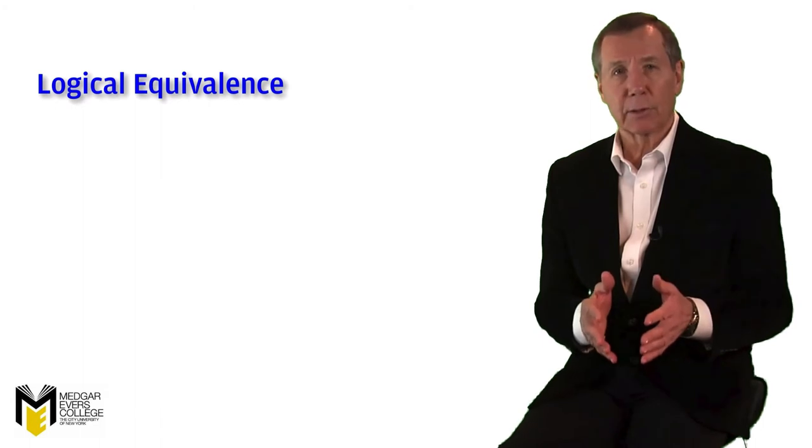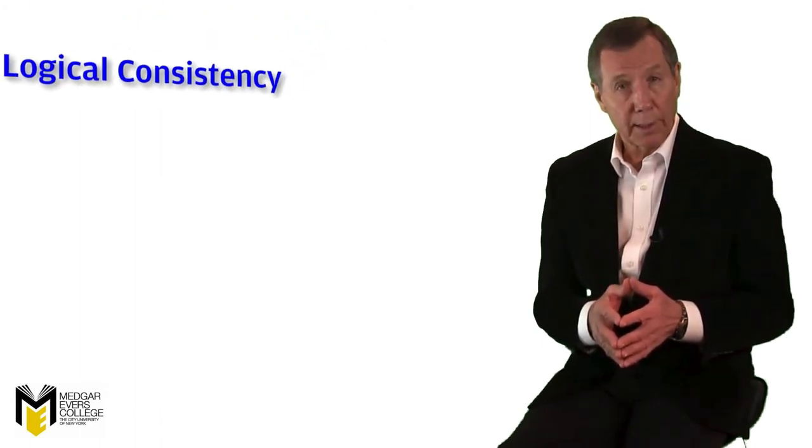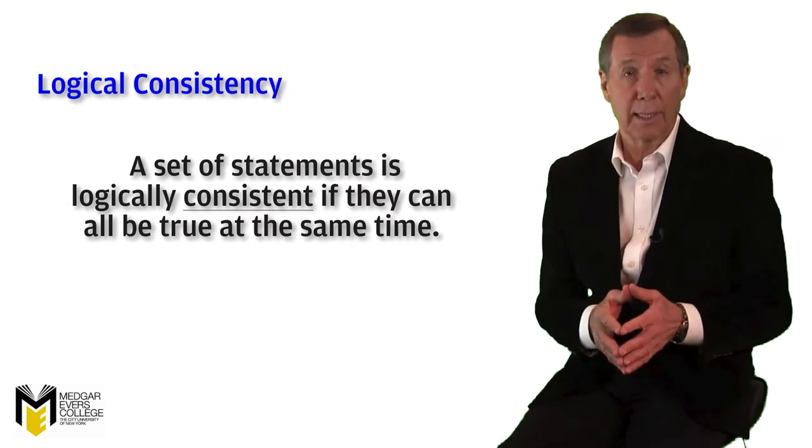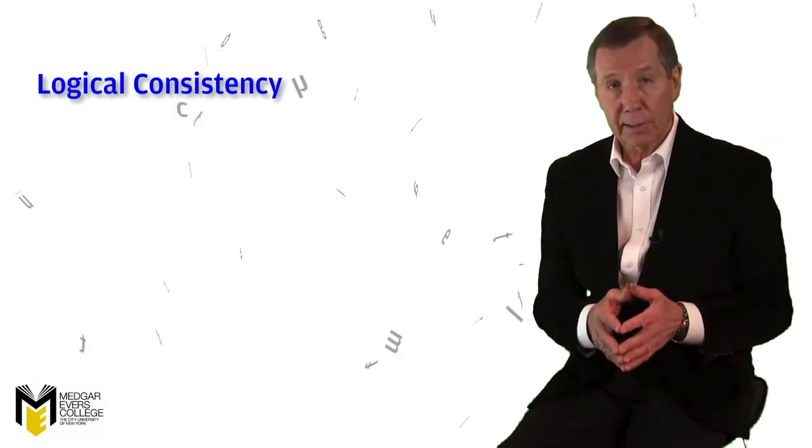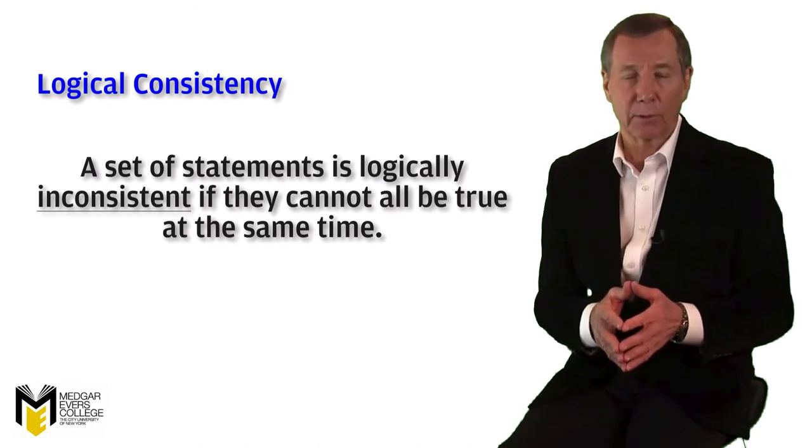In addition to logical equivalence, truth tables can also disclose whether or not a set of sentences is mutually consistent. That is, whether or not a set of sentences can all be true at the same time. A set of sentences is logically inconsistent if they cannot all be true at the same time.